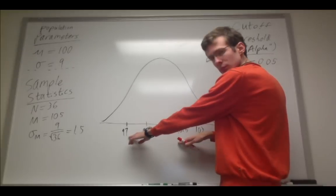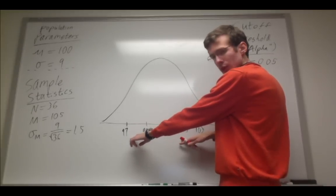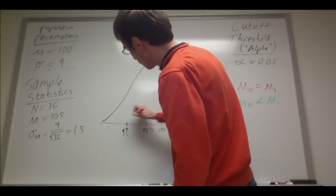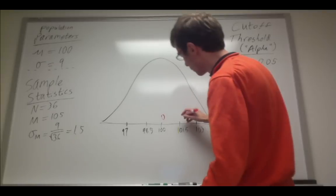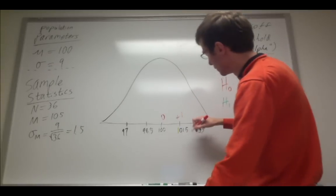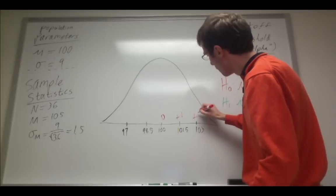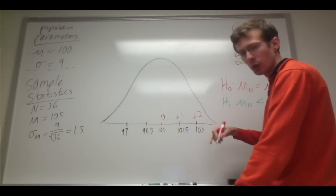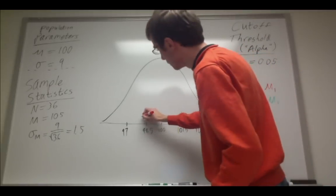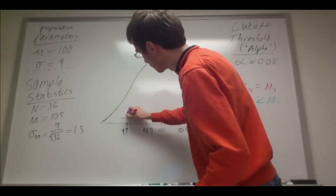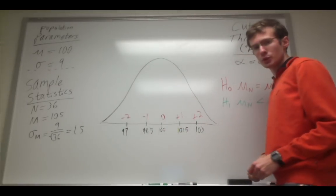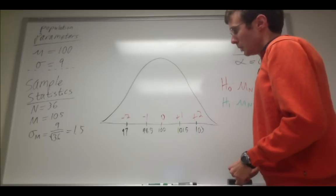So I've written the sample mean scores on the bottom. On the top, I'm going to write the actual z-scores just for reference. So a mean of 101.5 corresponds to a z-score of positive 1. 103 corresponds to a z-score of positive 2. And the converse for the other side of the distribution.